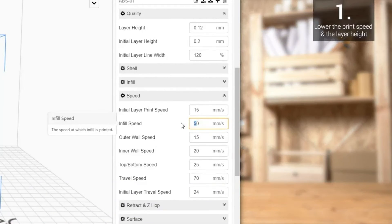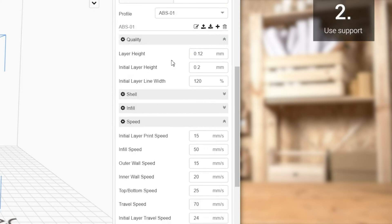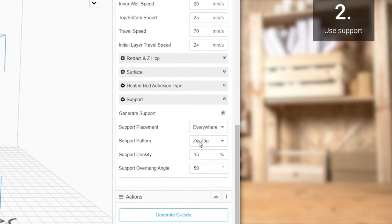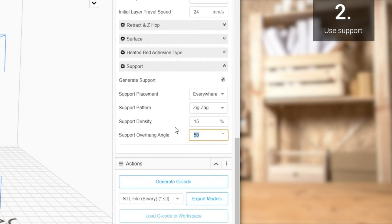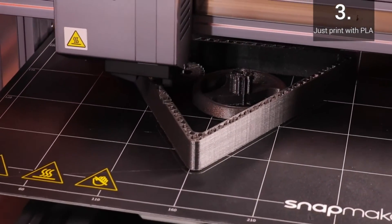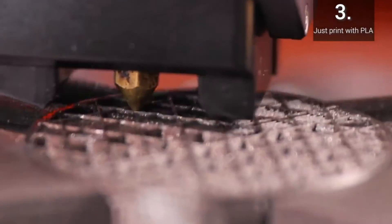One way to improve ABS overhang is lowering the print speed and the layer height. You can also set a proper support overhang angle so that parts beyond that angle can be supported. For most ABS filament, the angle can be up to 45 degrees. Also, always choose the right filament. When durability and heat resistance are not that important, you might as well print overhangs or bridges with PLA.